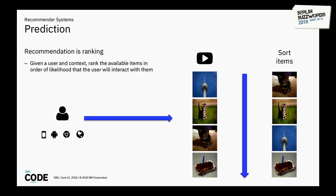Prediction in a recommender system is all about ranking. We take all available items and present the user a ranked list ordered by our estimate of their preference — by the likelihood they will interact with each item. Typically we have very large item sets but want to return only a very small set of five or ten recommendations.